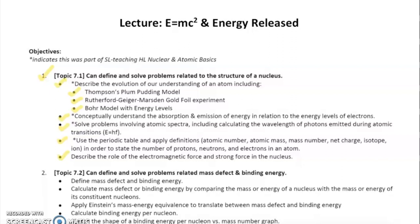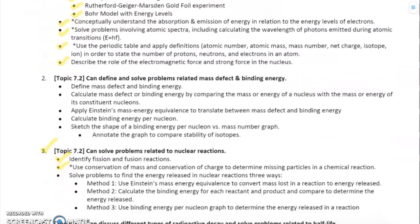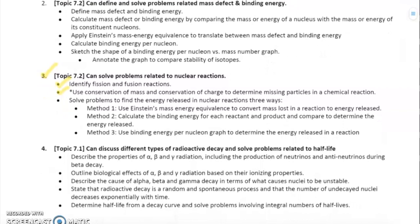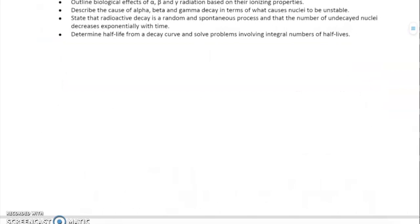Hi everyone! This lecture is going to be on E equals mc squared and the energy released in nuclear reactions. Taking a look at our objectives, we're making good progress. All of the yellow check marks have already been covered so far, your most recent being identifying fission and fusion reactions. Today we're really going to focus in on objective three: solving problems related to nuclear reactions, using Einstein's mass-energy equivalence to convert mass lost in a reaction into energy released.